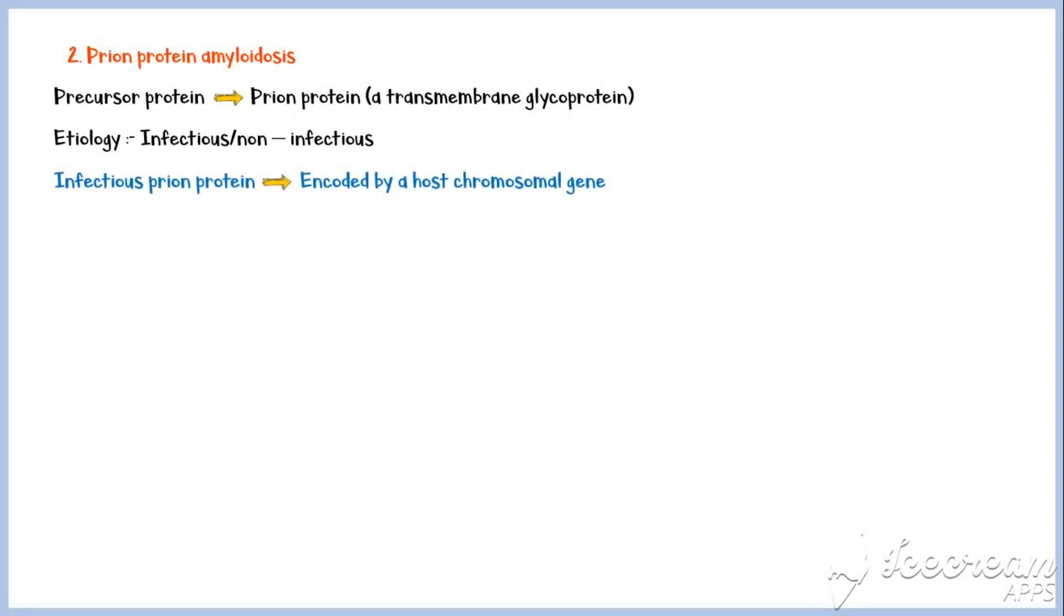Prion protein amyloidosis is another important type. Here, the precursor protein is a prion protein, which is a transmembrane glycoprotein. Etiology could be either infectious or non-infectious. Infectious prion protein is a homologous protein that is encoded by a host chromosomal gene.